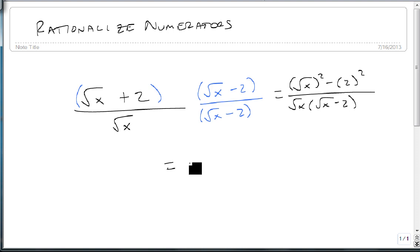Distributing, this gives me x minus 2 on top, x minus 2 root x on bottom once I distribute that square root of x through. So now I have rationalized my numerator because I no longer have a square root on top.